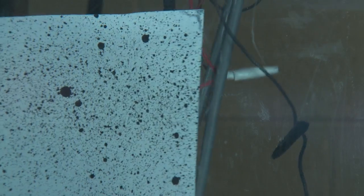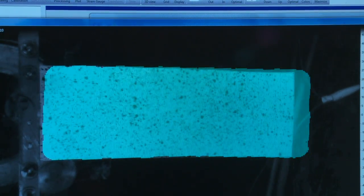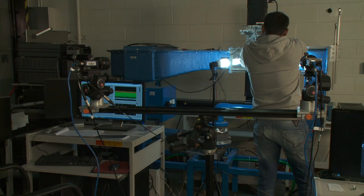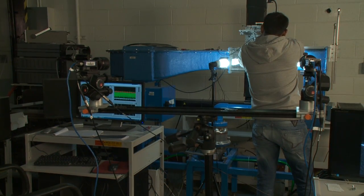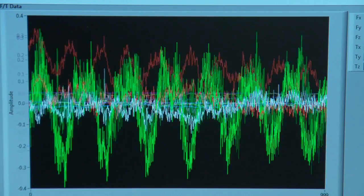So if you know where the speckles on the fin are moving, then you can extrapolate the displacements and the corresponding strains. And we can use the digital image correlation to look at how the structure is responding to the fluid. And we can measure the thrust using a six-axis force and moment transducer.